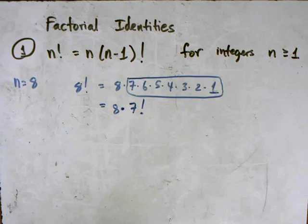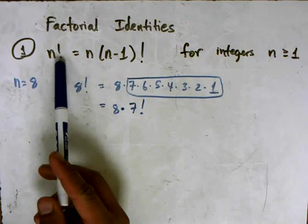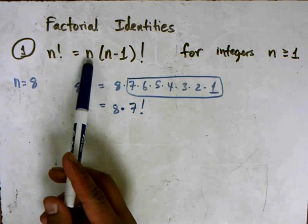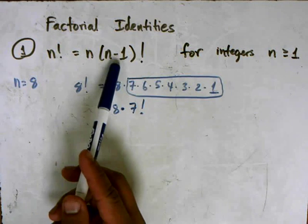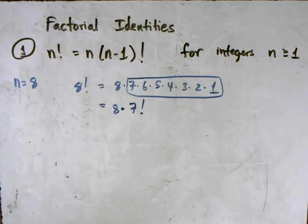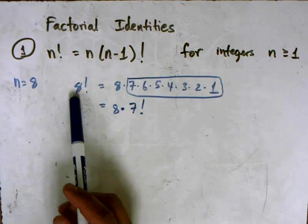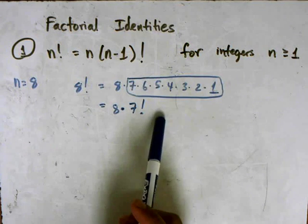And that's what this theorem is really saying, this identity is really saying, is that if you have a number factorial, it's really just that number and the number less than that factorial. In other words, 8 factorial is really 8 times 7 factorial.